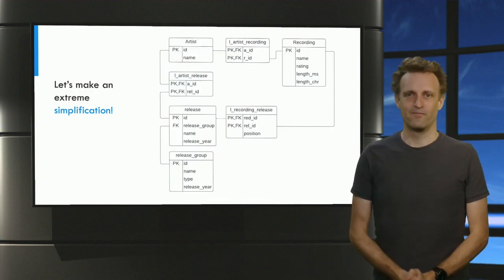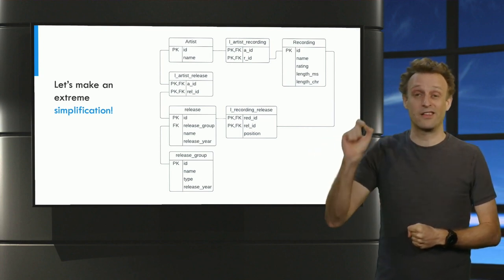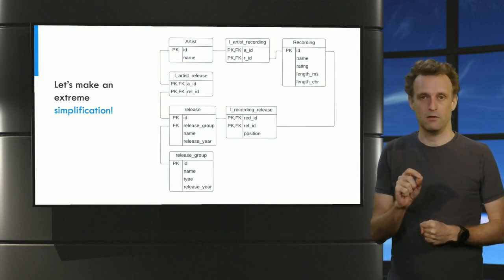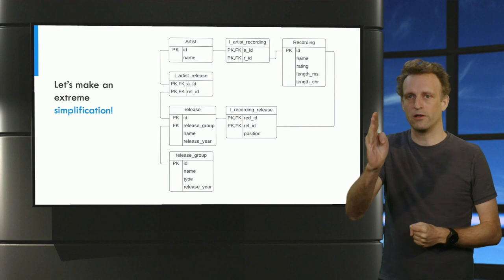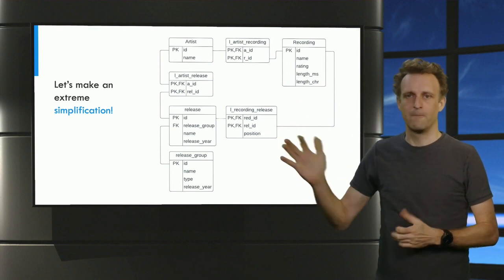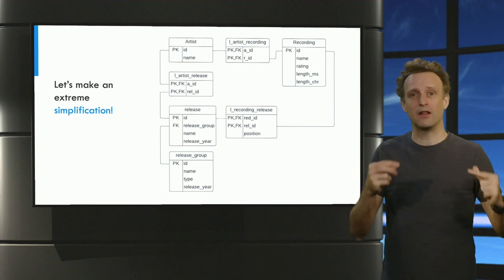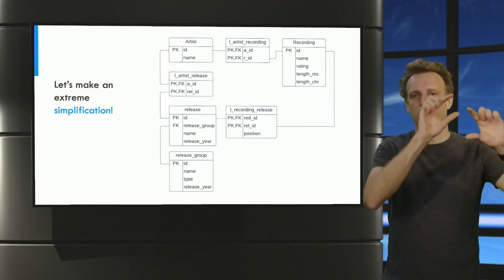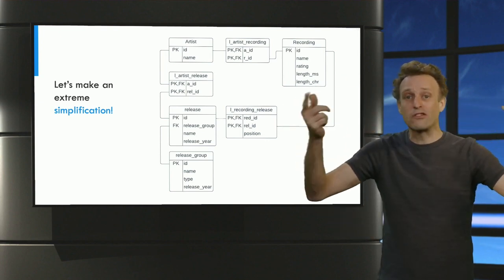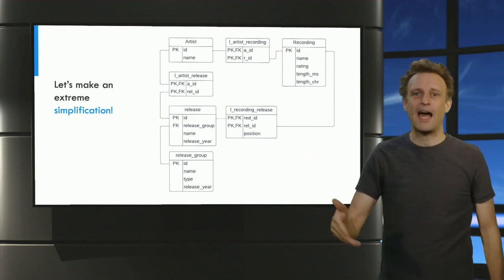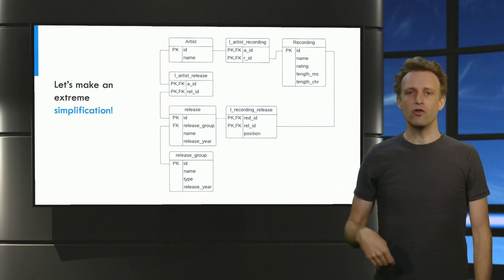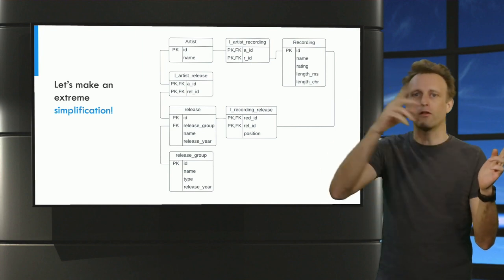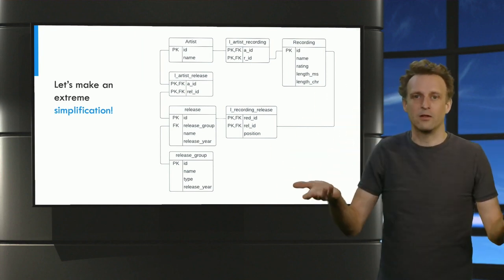I will make a simplification to the MusicBrainz schema. I'm only focusing on the entity types I'm interested in: artists, recordings, releases, and release groups. Release groups are things like albums and singles from a conceptual viewpoint. A release group could, for example, be the album Star Wars Trilogy Soundtrack. Release groups can then have multiple releases, which typically happen in different countries or different mediums — for example, a German CD box release of the Trilogy Soundtrack album, or another release on vinyl.